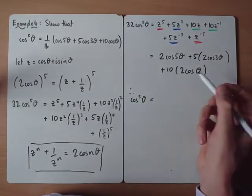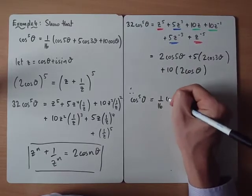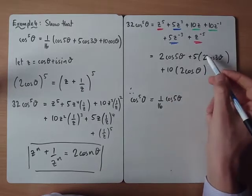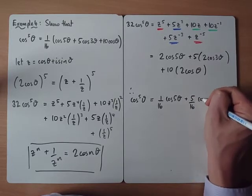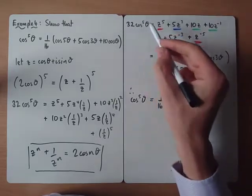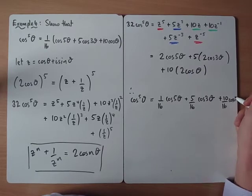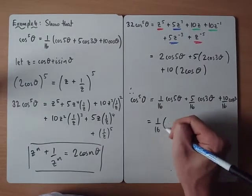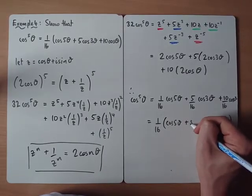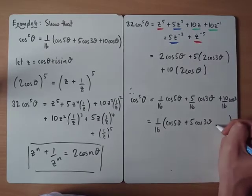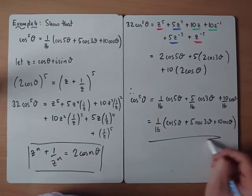We get 1 over 16. We divide 5 by 32, we get 5 over 16 cos of 5 theta. 10 divided by 32 would be 5 over 16 cos of 3 theta plus 10 over 16 cos theta. I suppose we should write it in the form given, just to fully ensure we get the full marks. There we go.